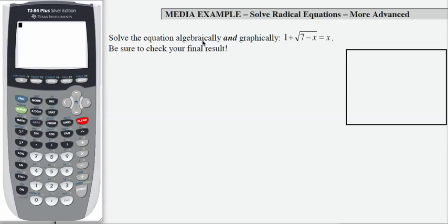Here I'm asked to solve an equation algebraically and graphically. I'm going to start graphically because that will help me know where I'm headed with the algebraic solution. The equation is 1 plus the square root of 7 minus x equals x.